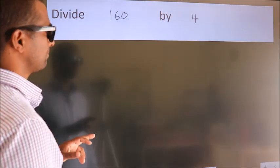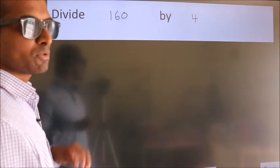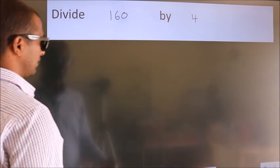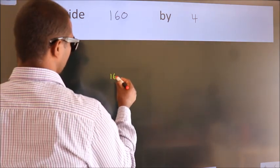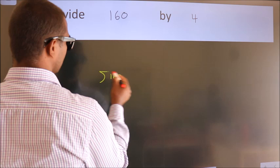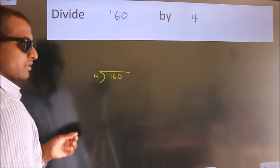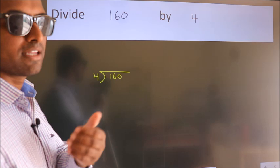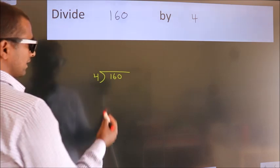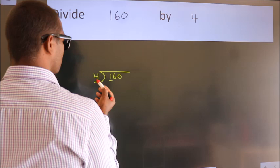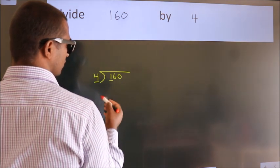Divide 160 by 4. To do this division, we should frame it this way: 160 here, 4 here. This is step one. Next, we have 1 here, 4 here. 1 is smaller than 4, so we should take two numbers.